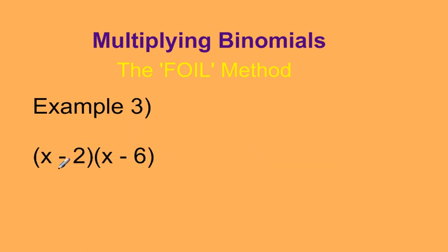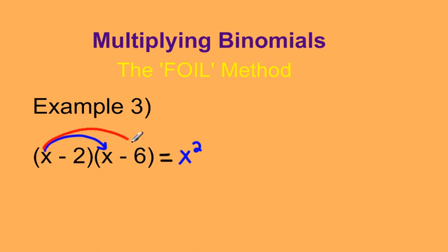We're going to look at one last example. This one has two negatives in the brackets, so let's see how this works. Using the FOIL method: F stands for first, so x times x is x squared. O stands for outside — positive x times negative 6; a positive times a negative gives us a negative, so that's negative 6x. I stands for inside — negative 2 times x gives us negative 2x.